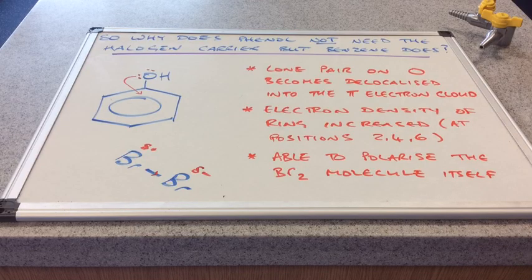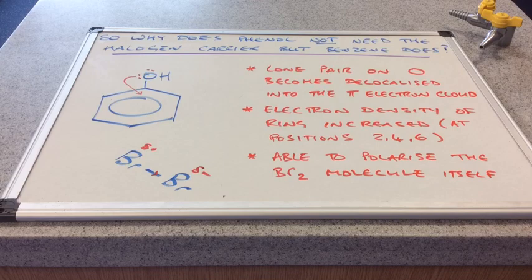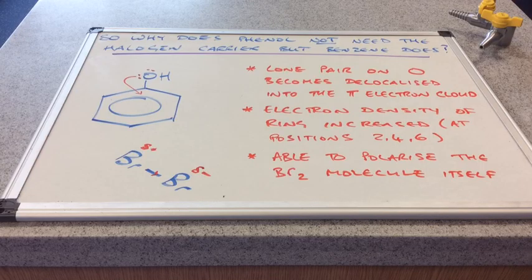Key point number two, the electron density of the benzene ring has been increased. Remember, there's now eight electrons in there as opposed to six. And you saw before that it's actually at positions 2, 4, 6, where the ring is activated.